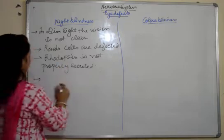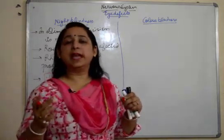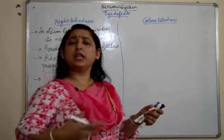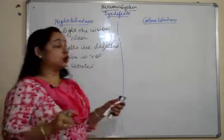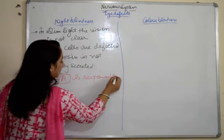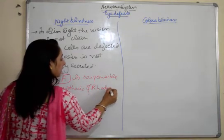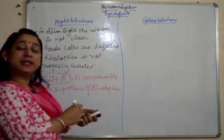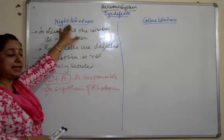For rhodopsin secretion, Vitamin A is required. Even young children when they are vaccinated, they are given drops of Vitamin A — because in India, many children have been found with this deficiency. Vitamin A is responsible for the synthesis of rhodopsin. So when the amount of Vitamin A is proper in our body, rhodopsin will be produced. A deficiency of Vitamin A can also lead to night blindness.